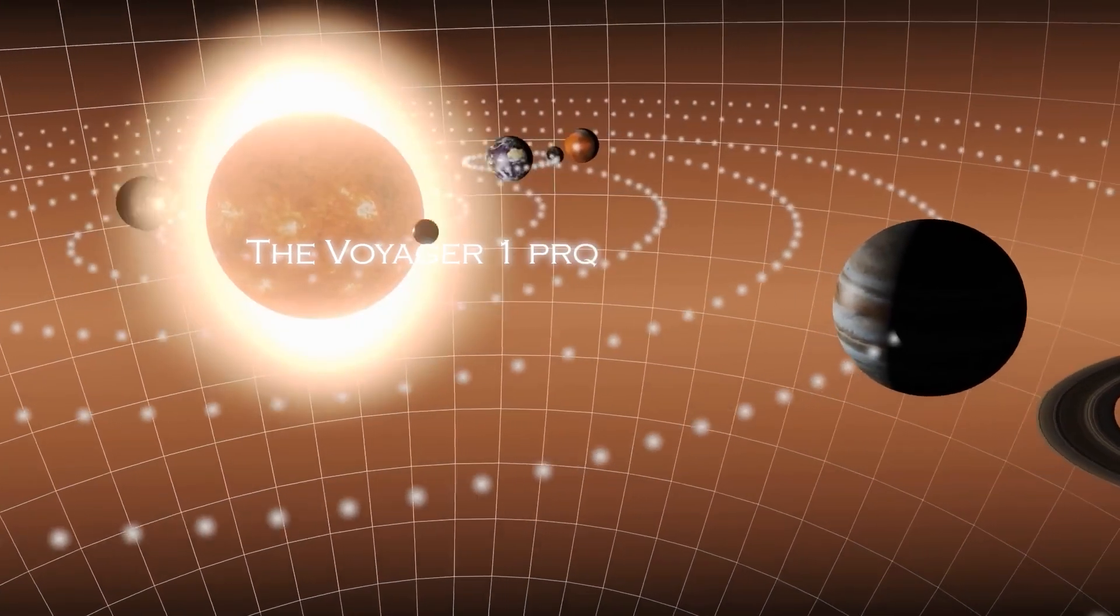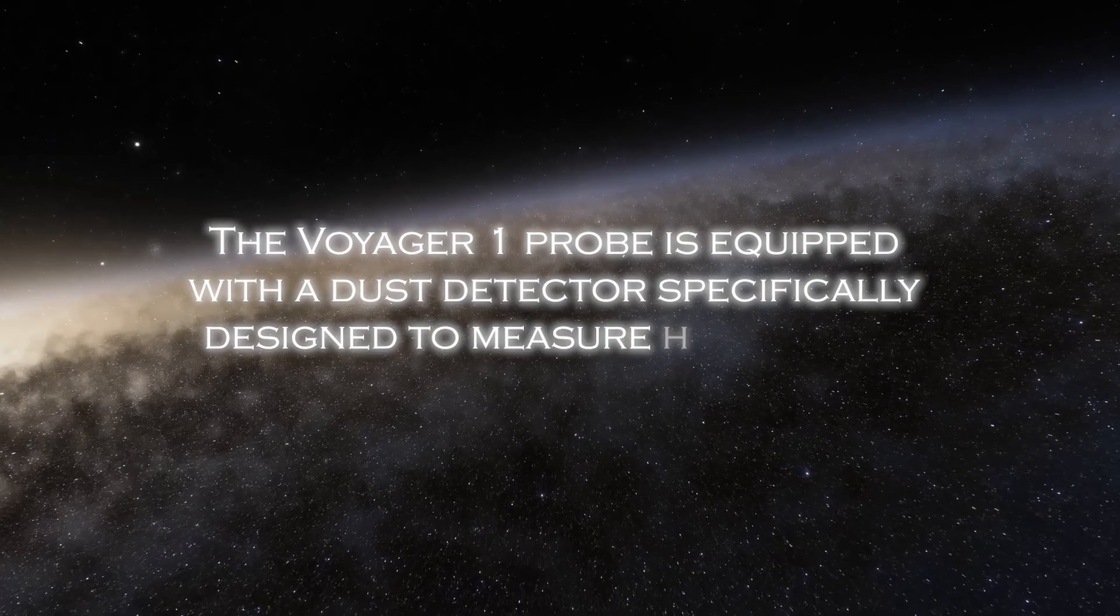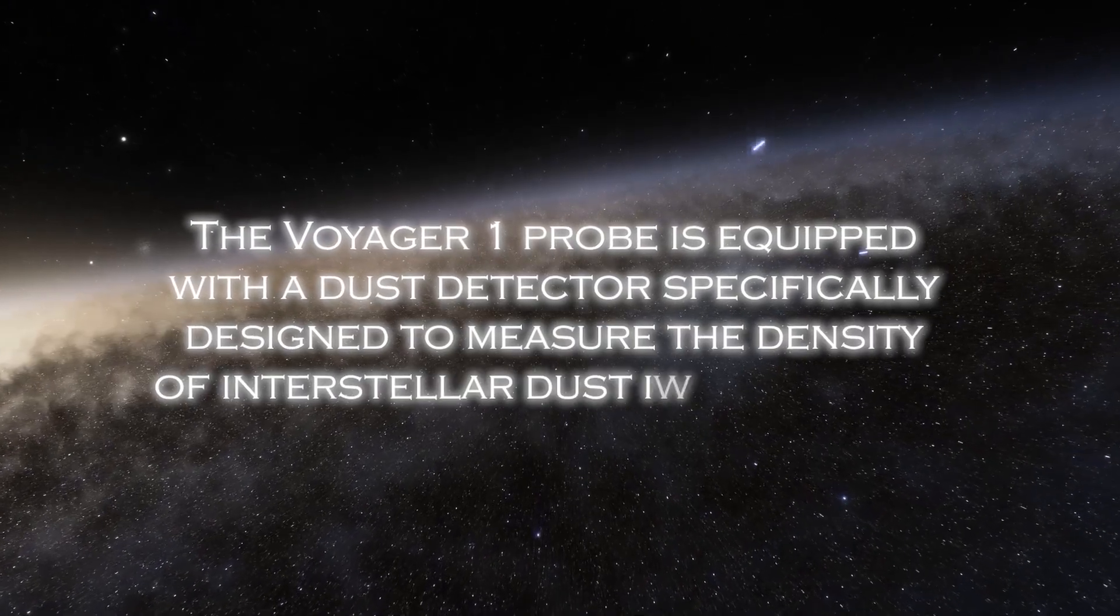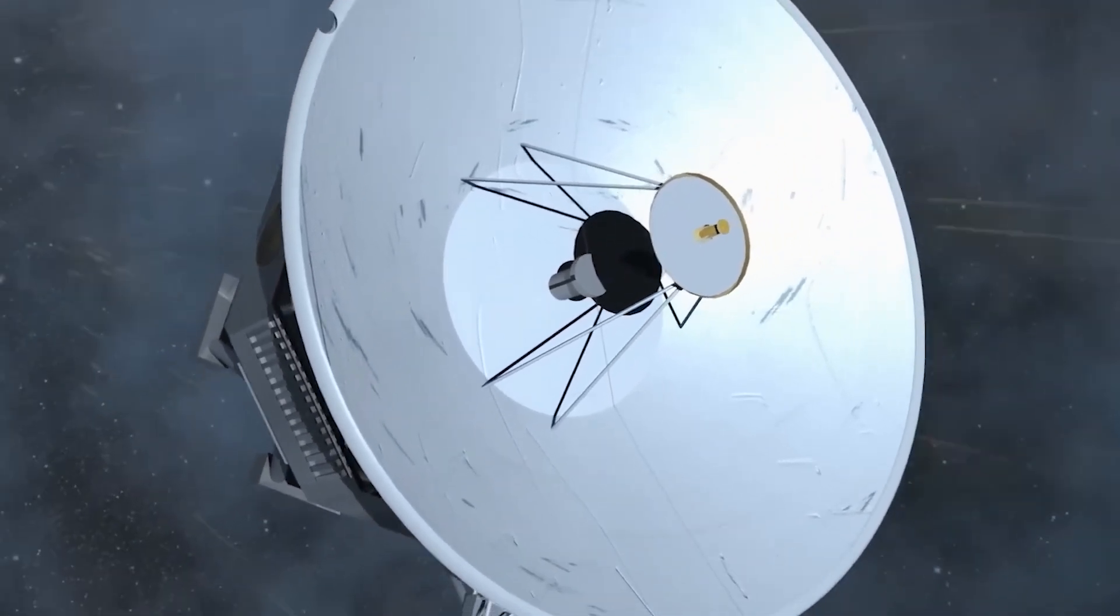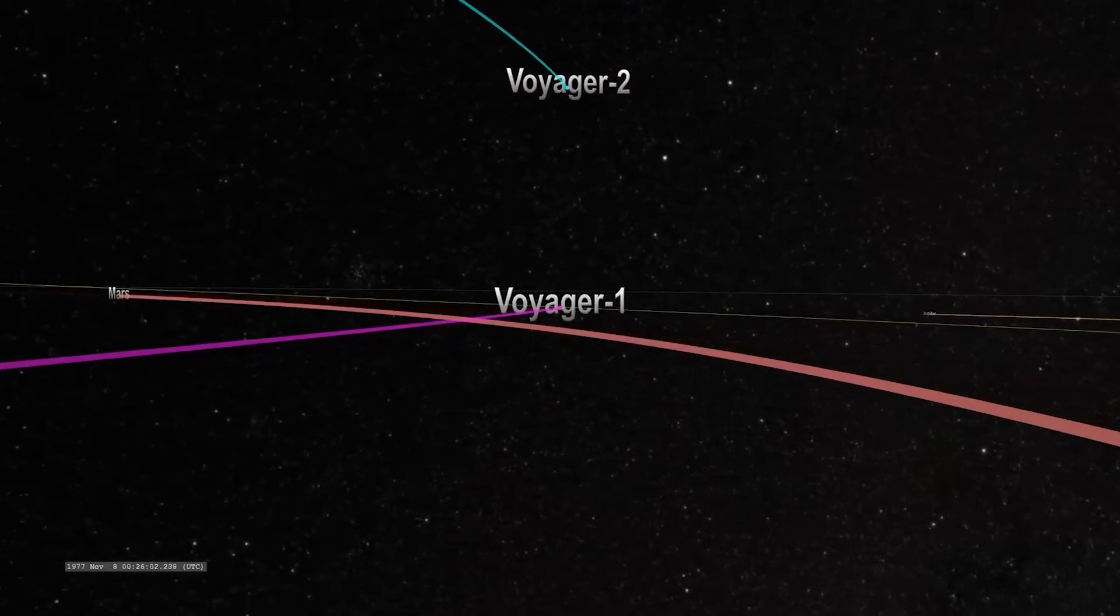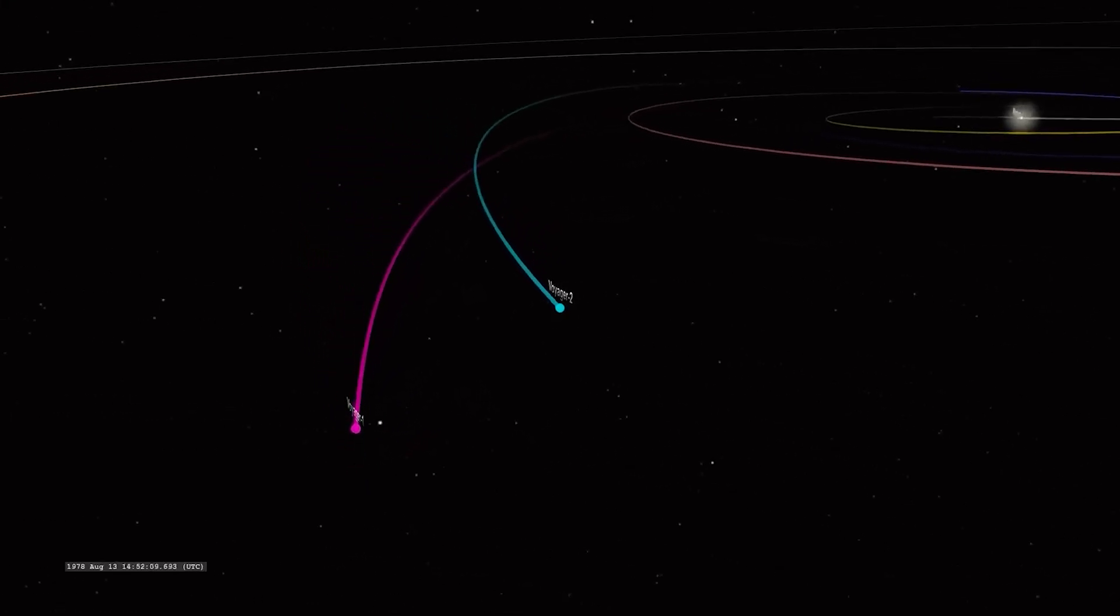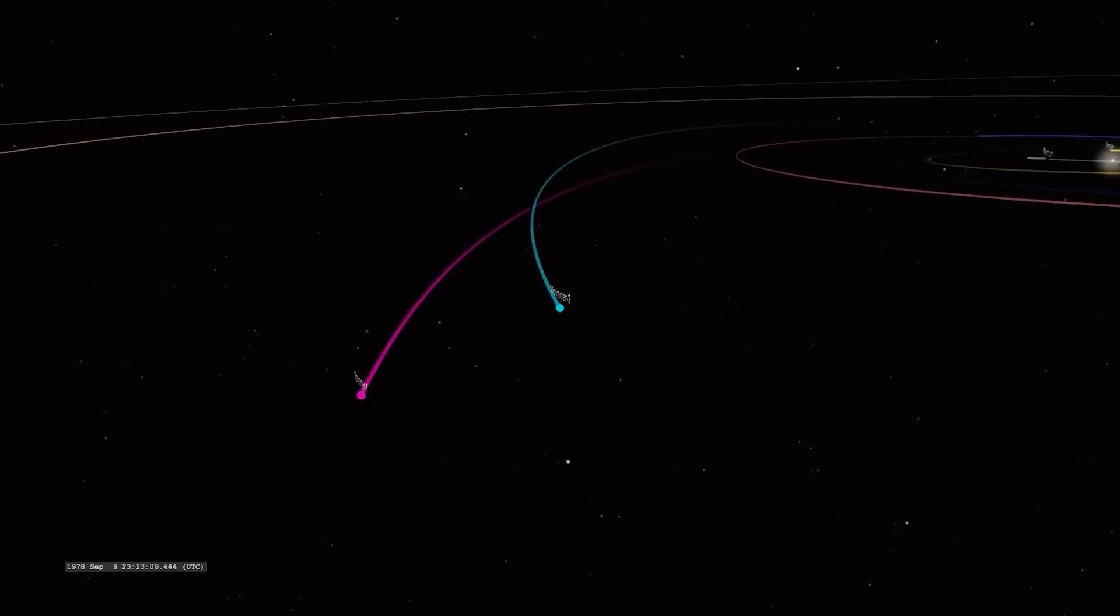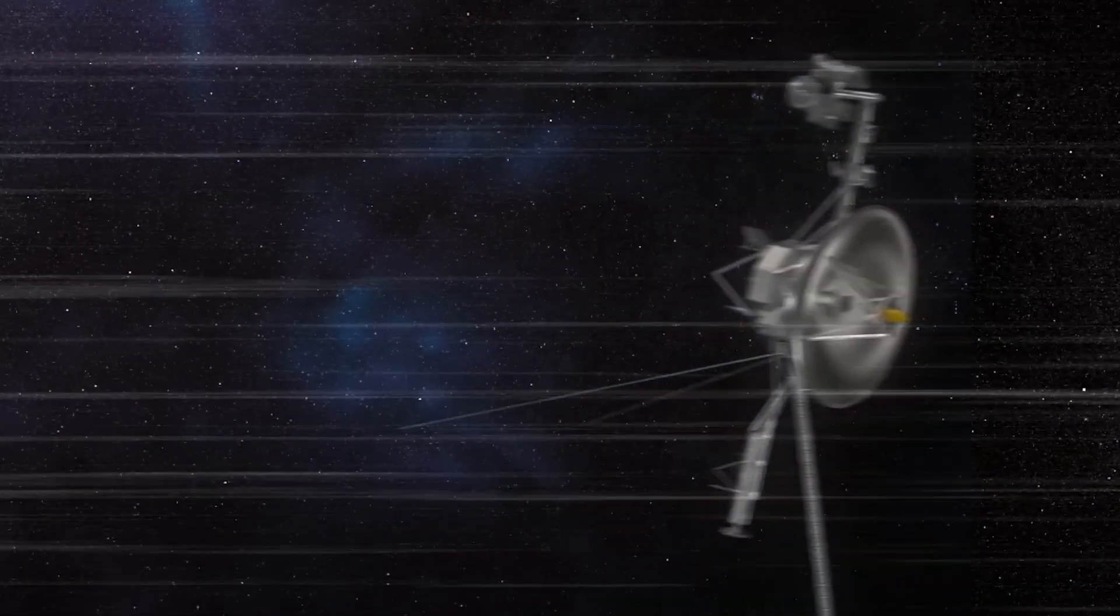The Voyager 1 probe is equipped with dust detectors, specifically designed to measure the density of interstellar dust in deep space. However, communication with Voyager 1 has become more difficult due to the limited resources NASA's global antenna system has to receive the mission signals. This has resulted in less frequent communication opportunities.